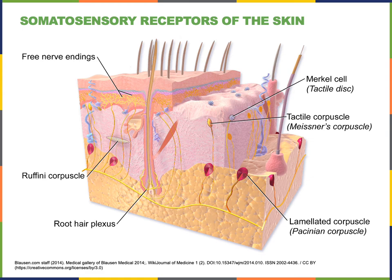There are also encapsulated nerve endings found in the skin. The Ruffini corpuscles, also known as bulbous corpuscles, detect stretching of the dermis. Ruffini corpuscles are also found in joint capsules and detect changes in body position, enabling the modality of proprioception — the detection of our body posture.